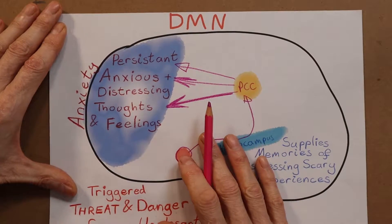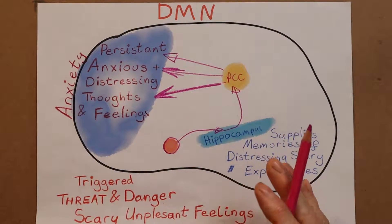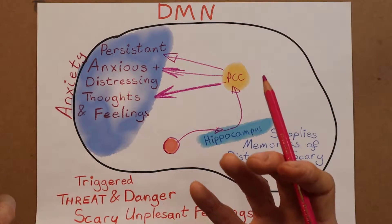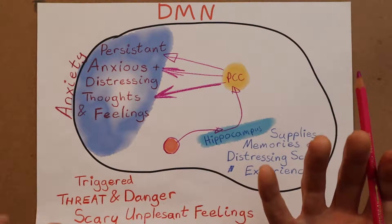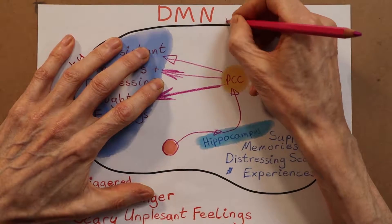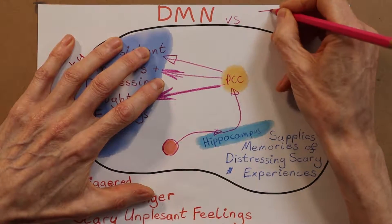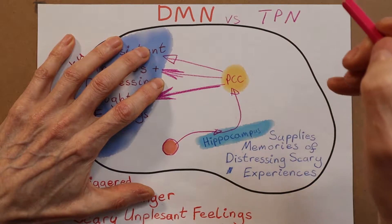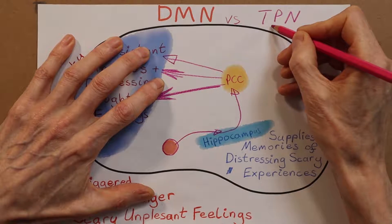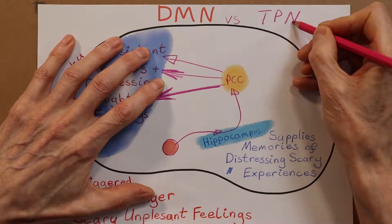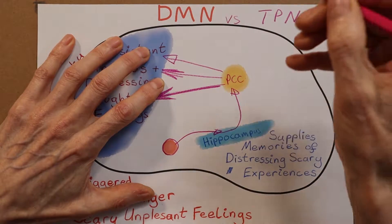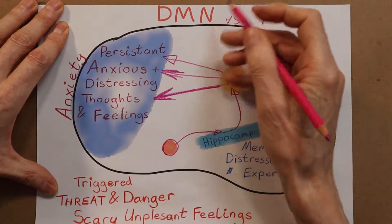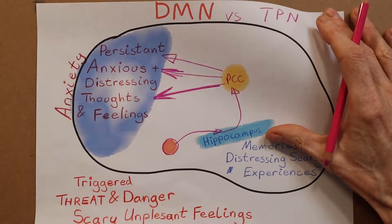In other words, you have anxiety. The good news is that the default mode network doesn't sit on its own. It has a counterbalancing network called the task positive network, or TPN, and by growing and strengthening the task positive network you can train your brain to dampen down the overactivity in the default mode network and counteract anxiety.